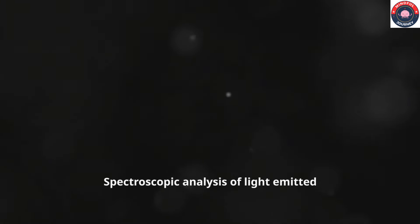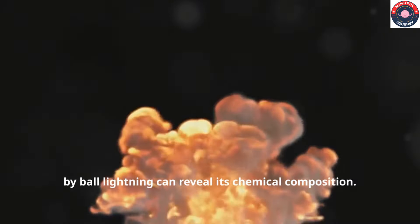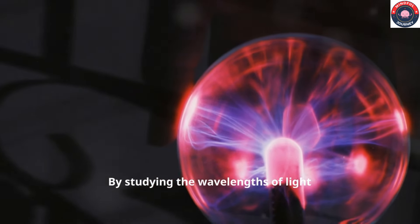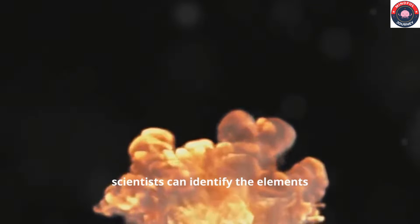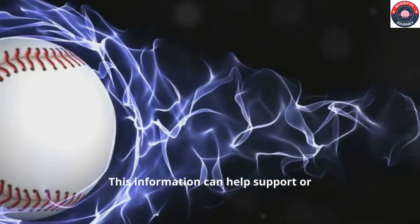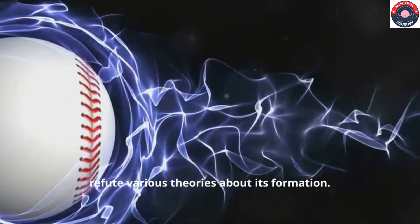Spectroscopic analysis of light emitted by ball lightning can reveal its chemical composition. By studying the wavelengths of light emitted by the glowing sphere, scientists can identify the elements present in the ball lightning. This information can help support or refute various theories about its formation.